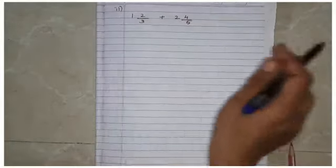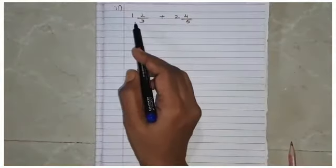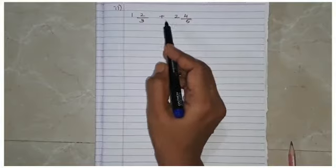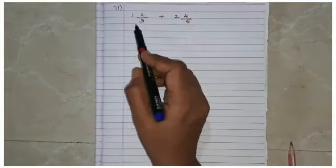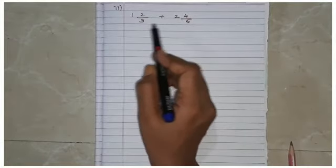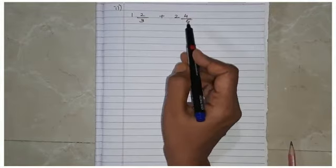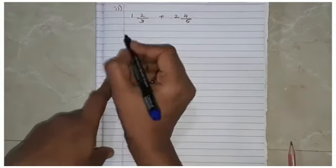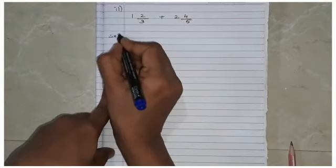Our second sub-question is 1²/₃ + 2⁴/₅. These are mixed fractions, so first we need to convert them into simple fractions.